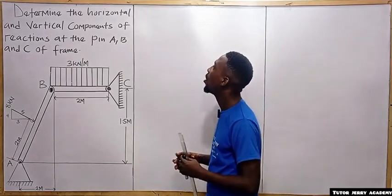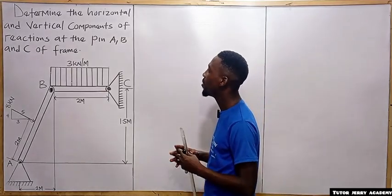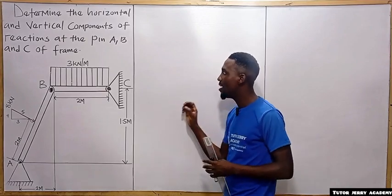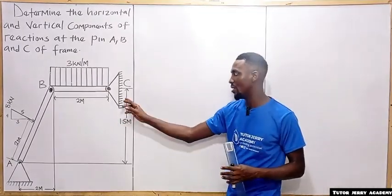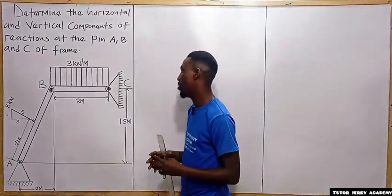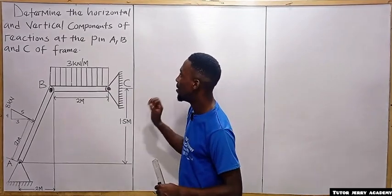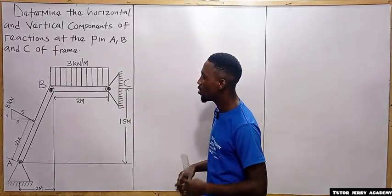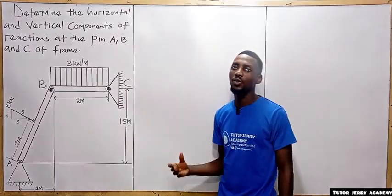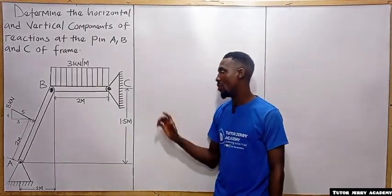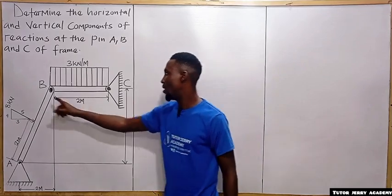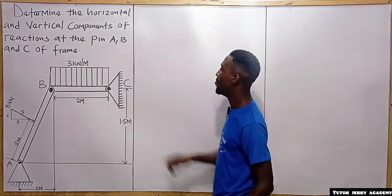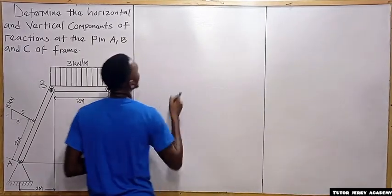Determine the horizontal and vertical components of reactions at pins A, B, and C of the frame structure. To solve this, we are going to split the beam into two beams: beam BC and beam AB. We are going to start with beam BC first.